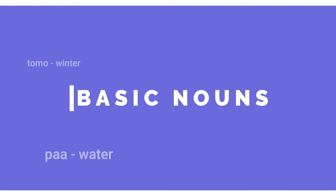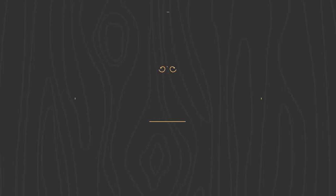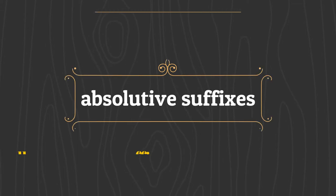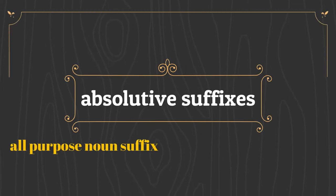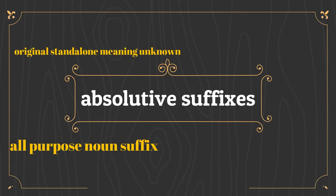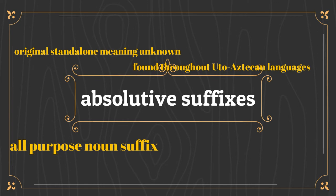Examples of basic nouns: pa, meaning water; tomo, meaning winter; naga, meaning sheep; kuna, meaning fire. There are several kinds of suffixes known as absolutive suffixes. This works almost as an all-purpose noun suffix, although their original meaning independently is not completely known. This feature is found among Uto-Aztecan languages.